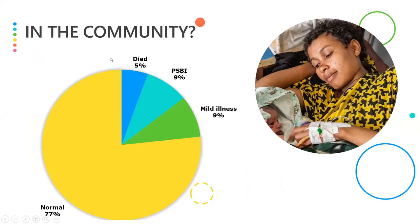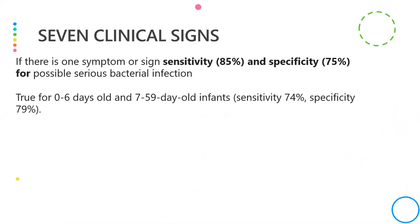From the community, up to 9% of presenting infants can have possible serious bacterial infection (PSBI) and another 9% a milder illness. Data from the Young Infants study identified seven clinical signs or symptoms; if any one is present, there is high risk for PSBI. Sensitivity was 85% and specificity 75%, valid for babies 0–6 days old and 7–59 days old.